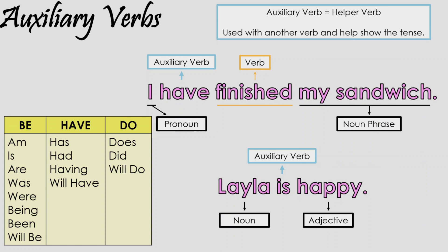A lot of auxiliary verbs are hidden in sentences in the contractions as well. For example, 'I am' becomes 'I'm.' There's still an auxiliary verb in there, it's just hiding.